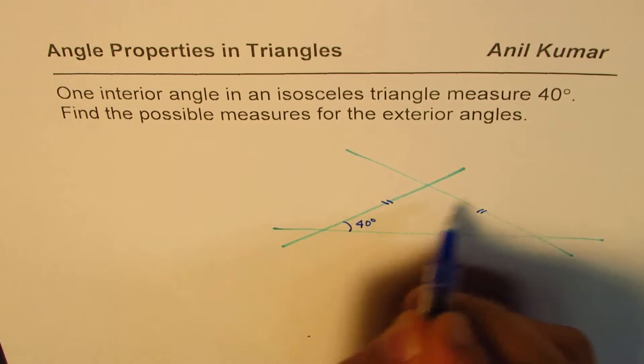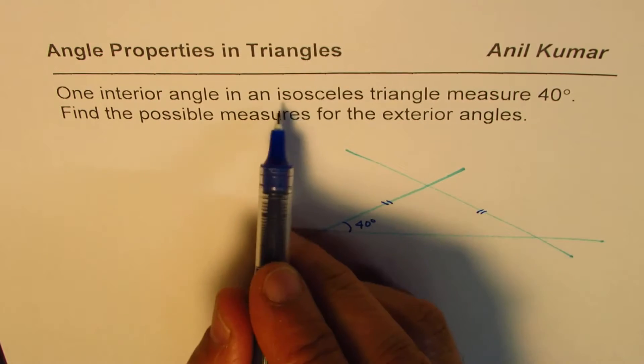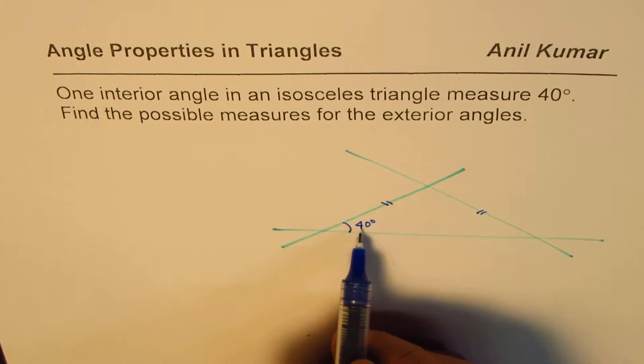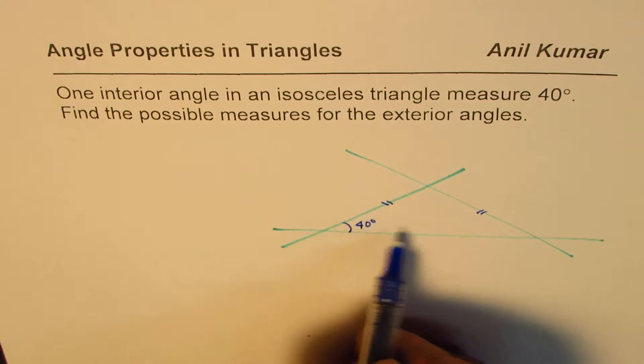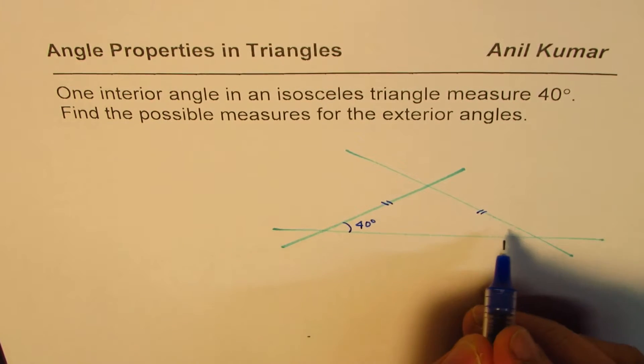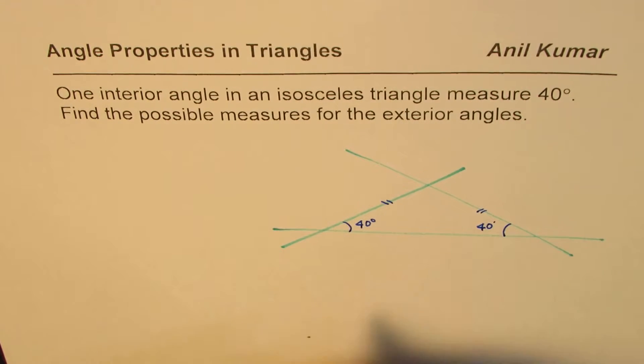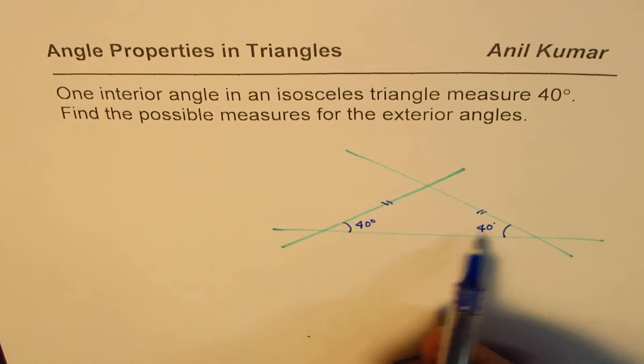Let's say these two sides are equal since the triangle given to us is an isosceles triangle. In that case, angles opposite to equal sides will be equal, so this angle will also be 40 degrees.